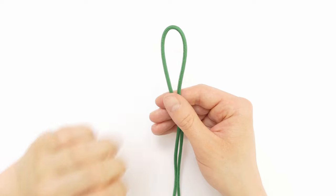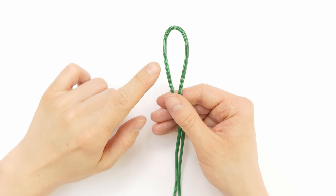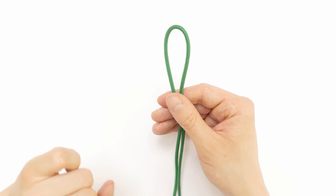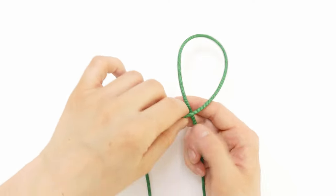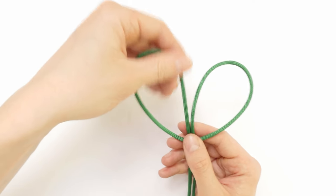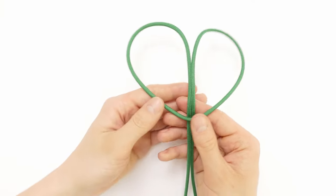I have a piece of paracord here and the first thing I'm going to do is use it to make two loops like this.